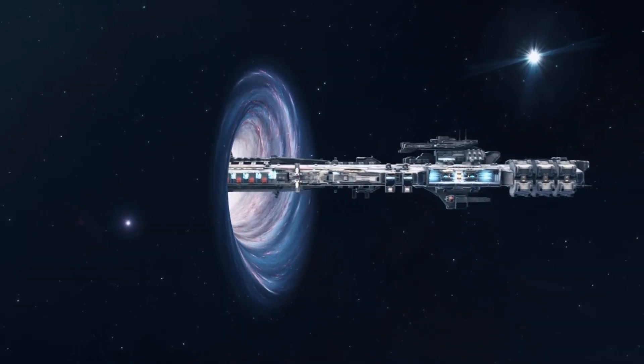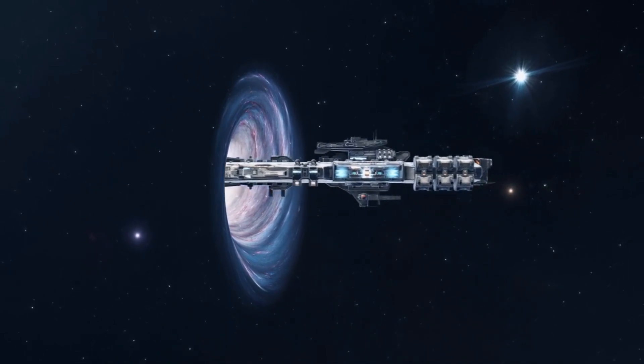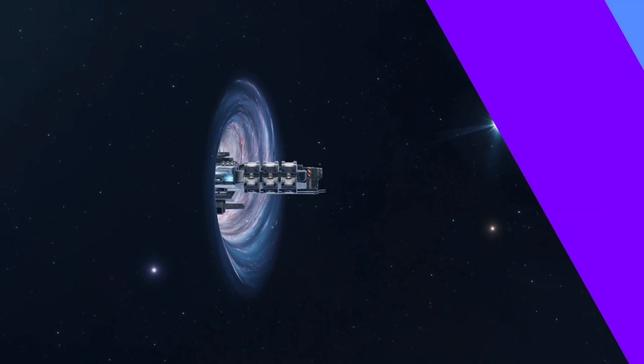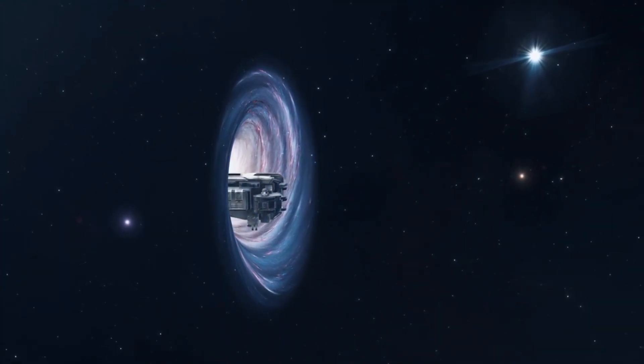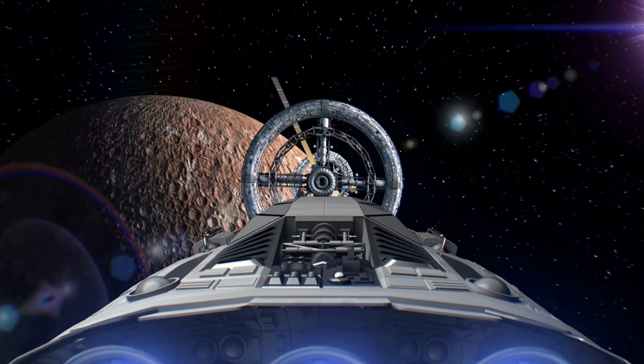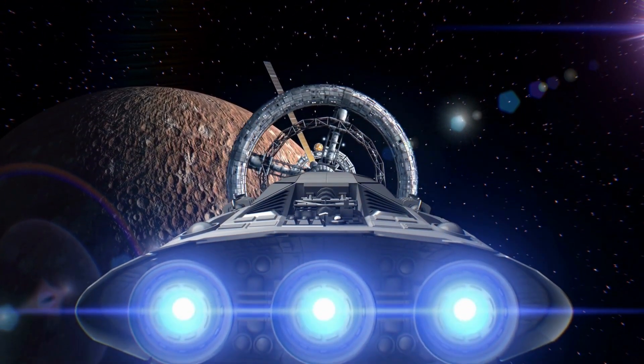Wormholes are theoretical structures in space-time that could potentially be used as a shortcut for faster-than-light travel. Imagine you are on Earth and you want to travel to a planet that is located on the other side of the galaxy. The normal way of traveling would take you thousands of years, even with the fastest spacecrafts.